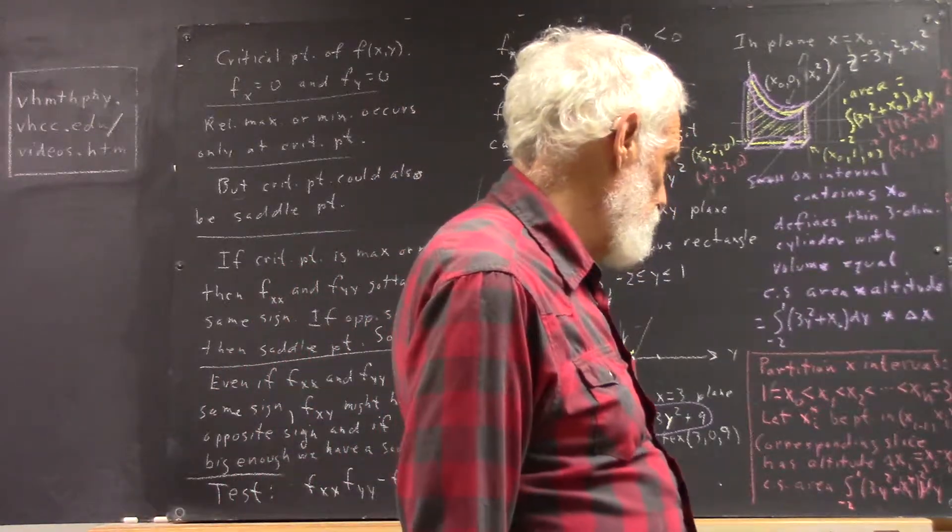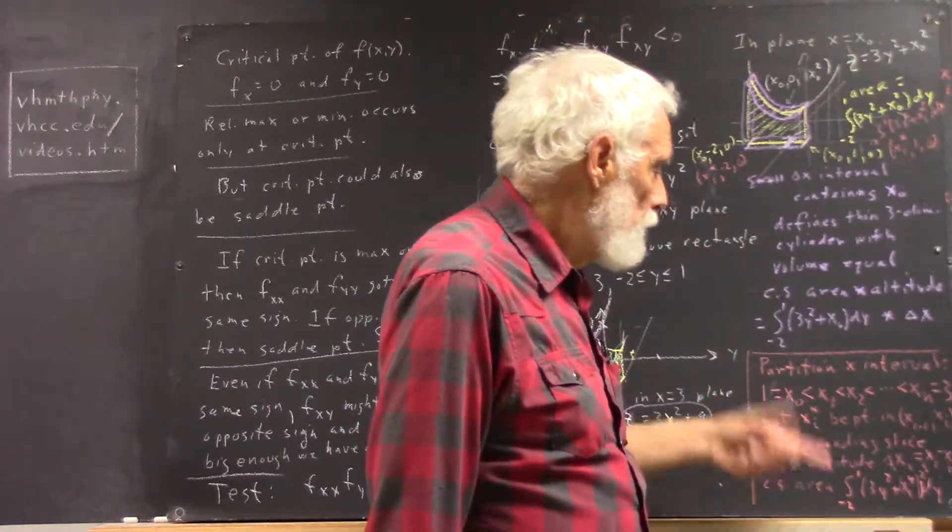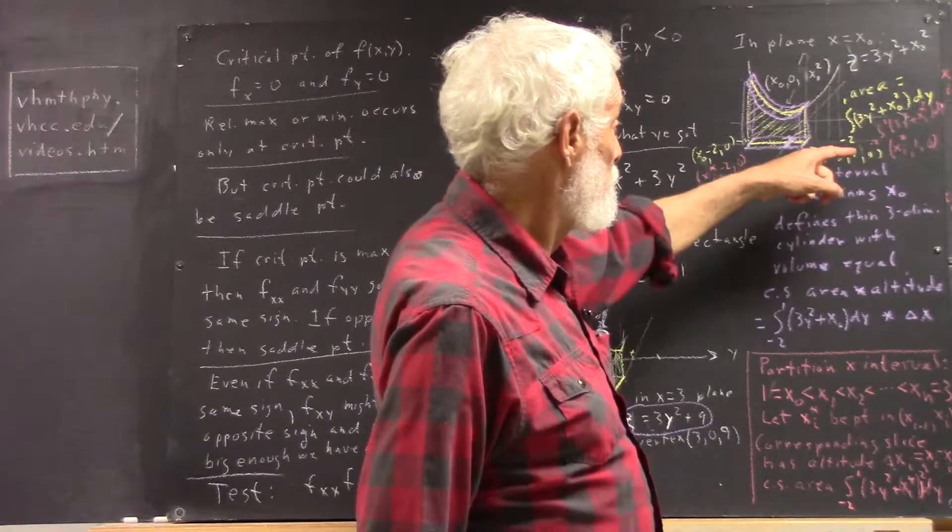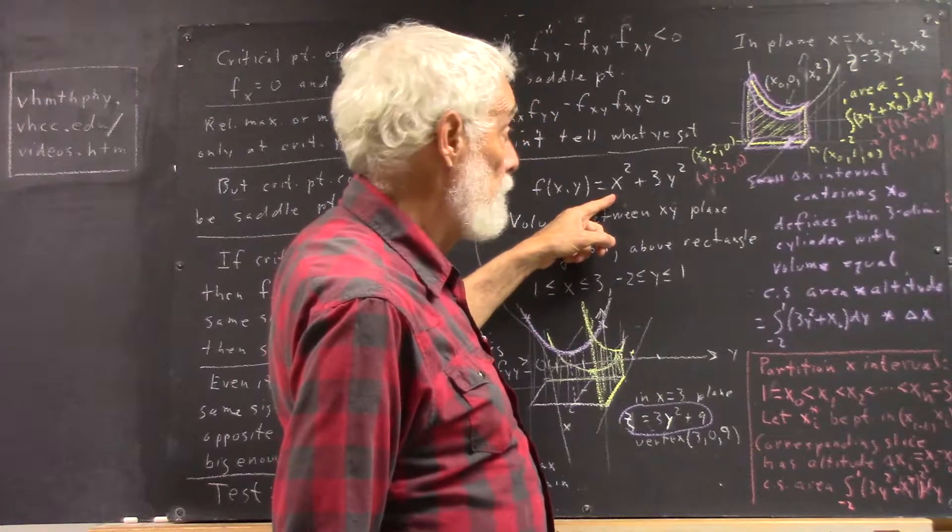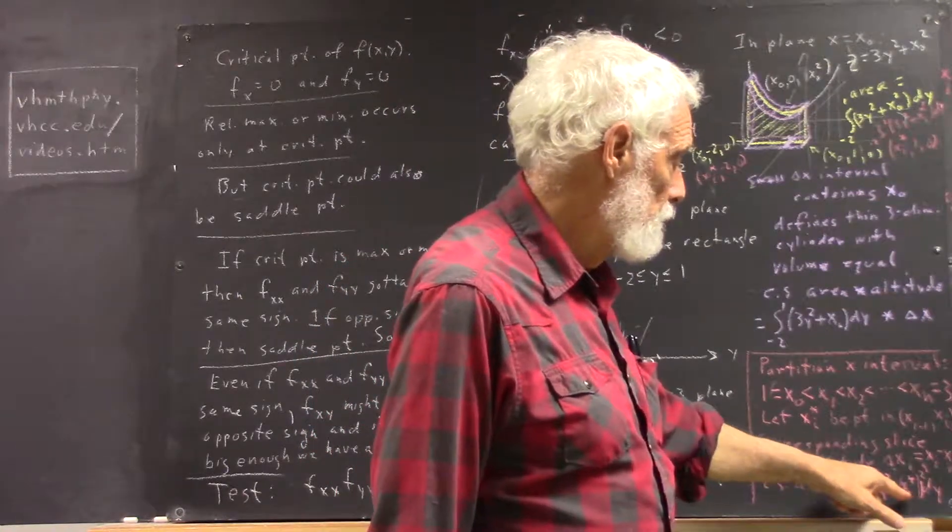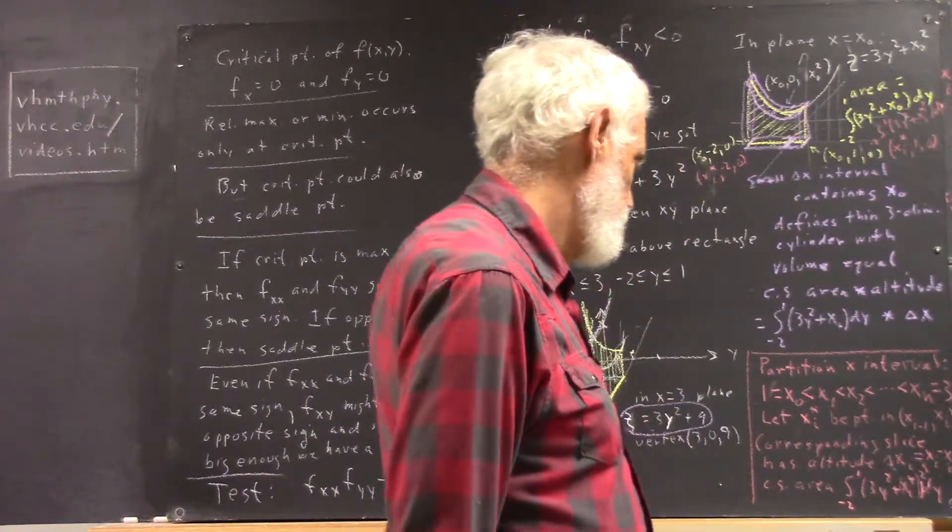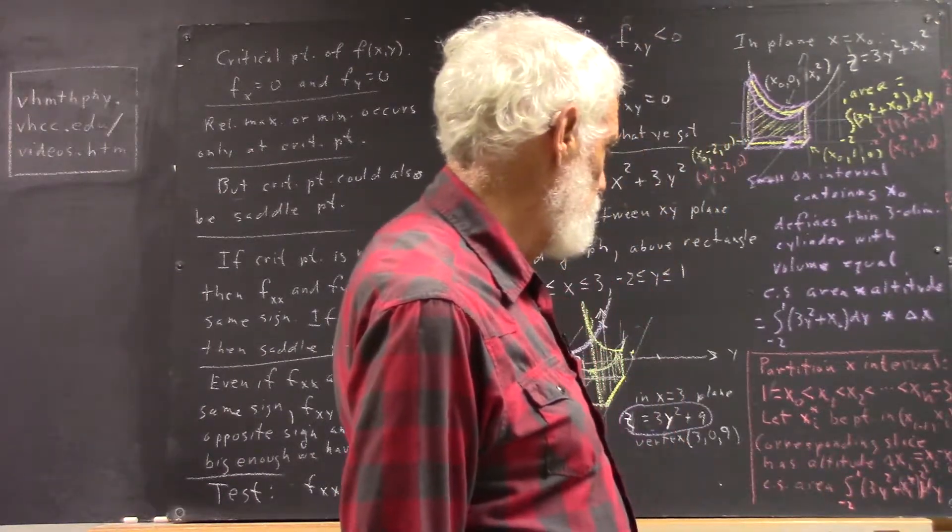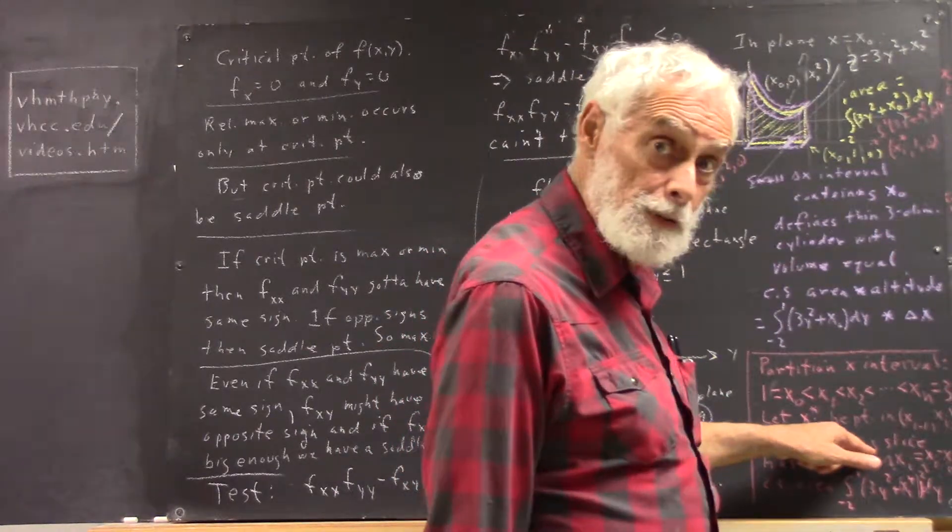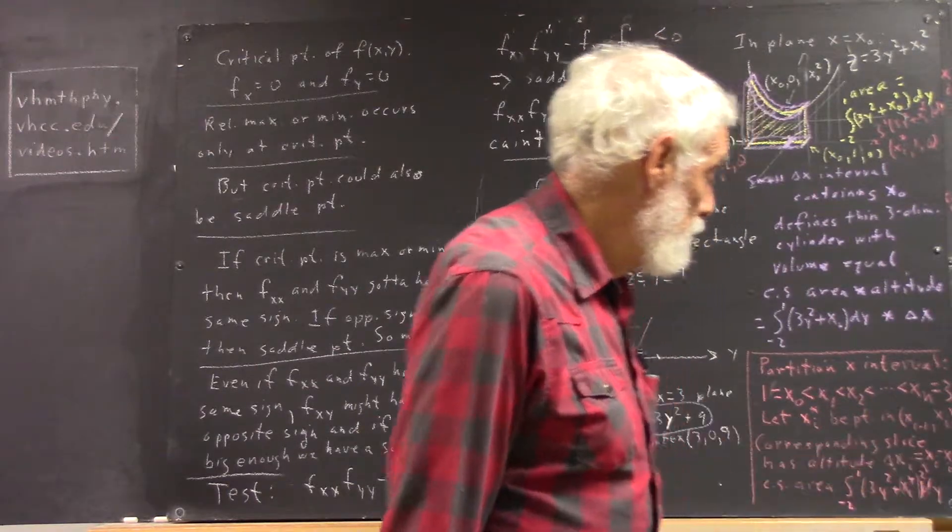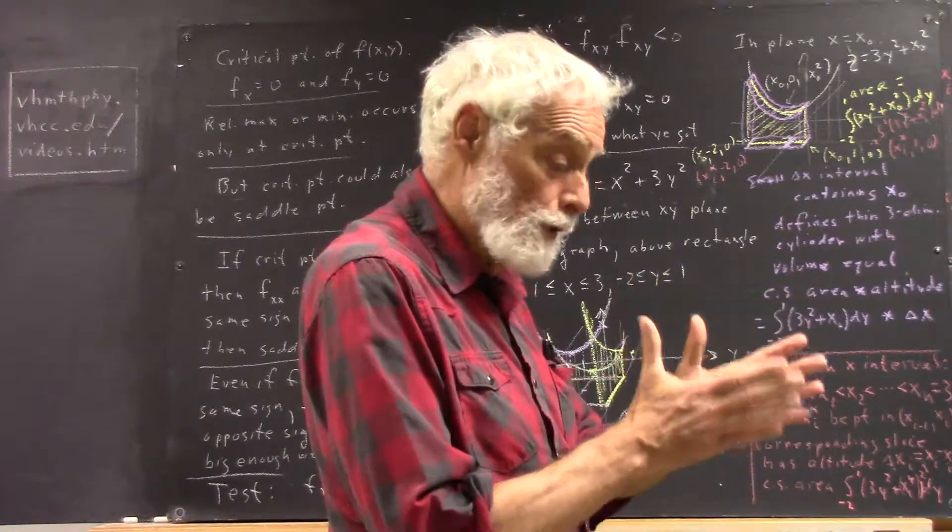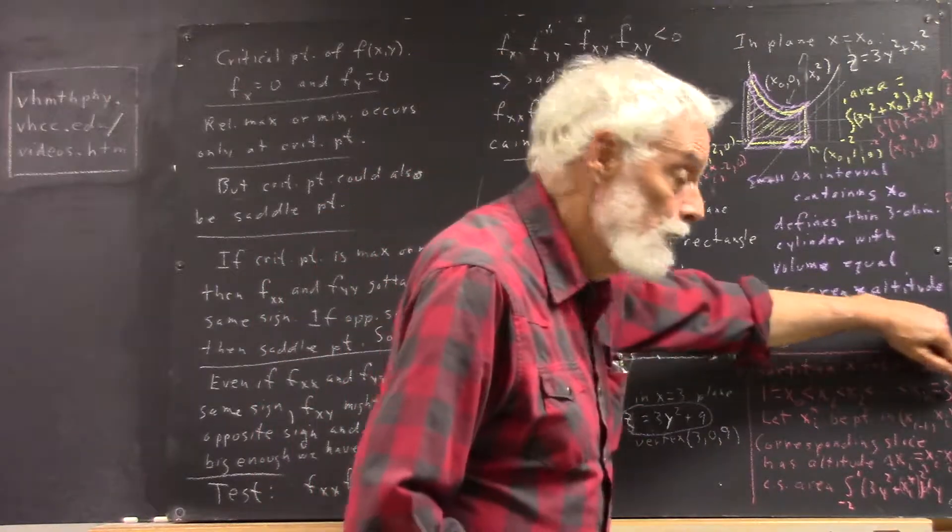And then it follows that your cross-sectional area, well, the cross-sectional area corresponding to x_i star, well, just like we substituted x-naught for x here to get the cross-sectional area, we're going to substitute x_i star for x here. And we're going to get 3y squared plus x_i star squared. And then that's dy. That's the cross-sectional area. If we multiply that by our delta x sub i, we get the approximate volume for our i-th,